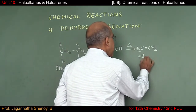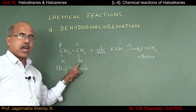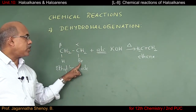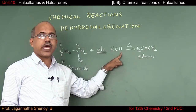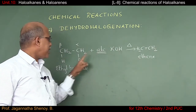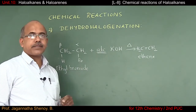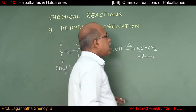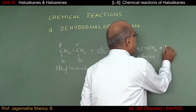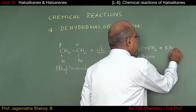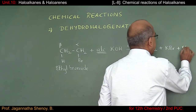In dehydrohalogenation, the substrate is an alkyl halide. The reagent must be alcoholic potash — the word 'alcoholic' is very important. If aqueous KOH is used, a substitution reaction takes place where the Br group is replaced. The reaction condition is heating. The halogen atom is removed from the alpha carbon atom, and a double bond is introduced between alpha and beta carbons.